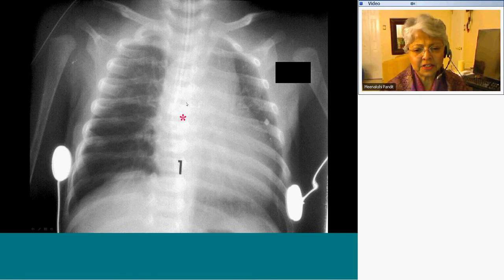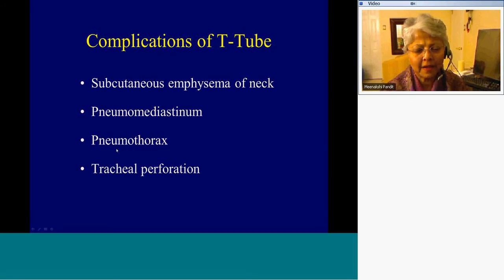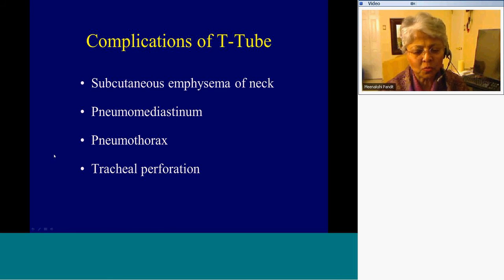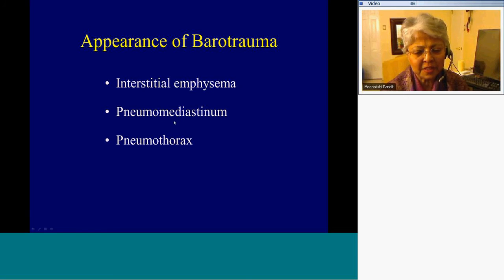This is a pediatric patient — the carina is somewhere in this location, and the endotracheal tube is clearly heading towards the right main stem bronchus, which will eventually lead to collapse of the left lung. The big complications for the tracheostomy tube include subcutaneous emphysema of the neck, pneumomediastinum, pneumothorax, and tracheal perforation, especially of the posterior wall. The radiographic or CT appearance of barotrauma includes interstitial emphysema, pneumomediastinum, and pneumothorax.